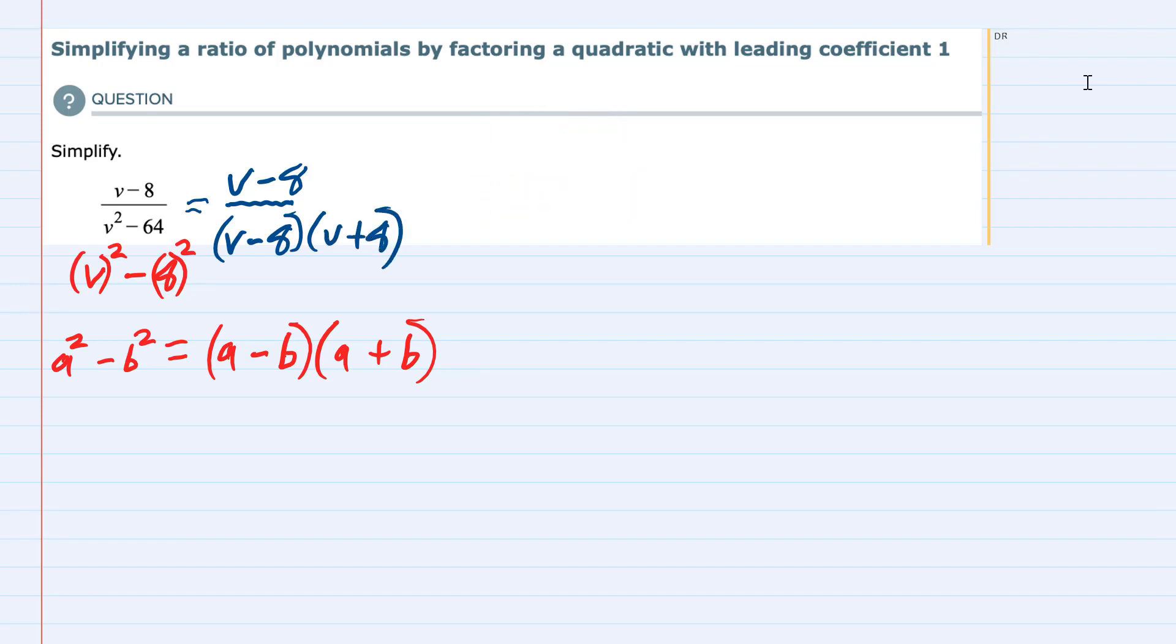And now we recognize that both the top and the bottom have a v minus 8, and that's going to allow us to cancel the v minus 8.